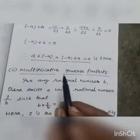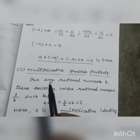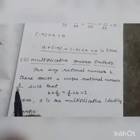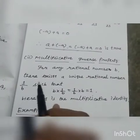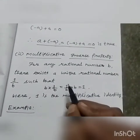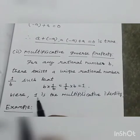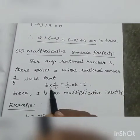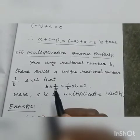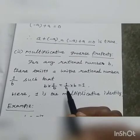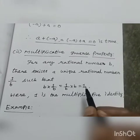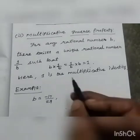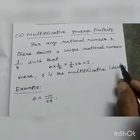Next we see the multiplicative inverse property. For any rational number B, there exists a unique rational number 1/B, such that B × (1/B) = (1/B) × B = 1. So we take any rational number B, and B × (1/B) and (1/B) × B both equal 1 only. Here 1 is the multiplicative identity.